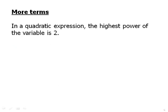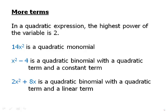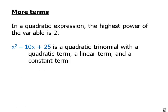It gets a little more interesting when we talk about quadratics. In a quadratic expression, the highest power of the variable is 2. So 14x squared, that is a quadratic monomial, a single term with the highest power is 2. x squared minus 4 is a quadratic binomial with a quadratic term, x squared, and a constant term, negative 4. 2x squared plus 8x is a quadratic binomial with a quadratic term, 2x squared, and a linear term, 8x. x squared minus 10x plus 25 is a quadratic trinomial with a quadratic term, the x squared, a linear term, negative 10x, and a constant term. And so for example, we could ask, what is the coefficient of the linear term? The coefficient of the linear term here is negative 10.